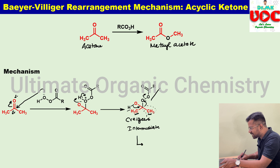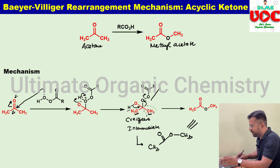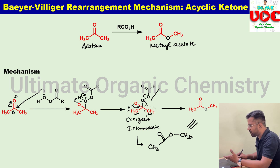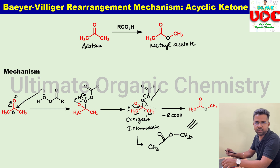The product is CH₃–C(=O)–O–CH₃, which is methyl acetate. The Criegee intermediate undergoes rearrangement and produces the ester product by the removal of carboxylic acid. If asked about the by-product of Baeyer-Villiger oxidation, the answer is carboxylic acid.